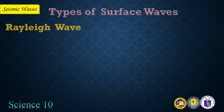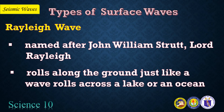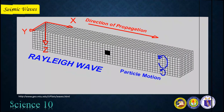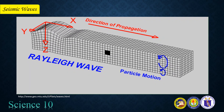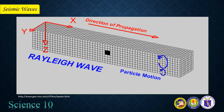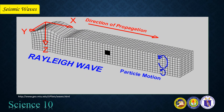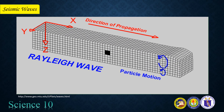Moving on to the Rayleigh wave. It was named after John William Strutt, Lord Rayleigh, who mathematically predicted the existence of this kind of wave in 1885. Rayleigh wave rolls along the ground just like a wave rolls across a lake or an ocean. Here is a Rayleigh wave in action. Because it rolls, it moves the ground up and down and side to side in the same direction that the wave is moving. Most of the shaking felt from an earthquake is due to the Rayleigh wave, which can be much larger than the other waves.